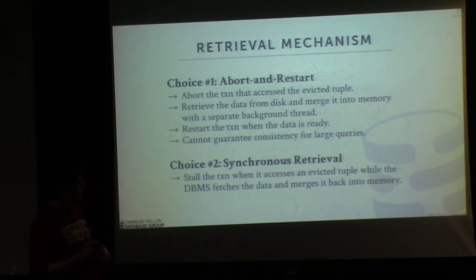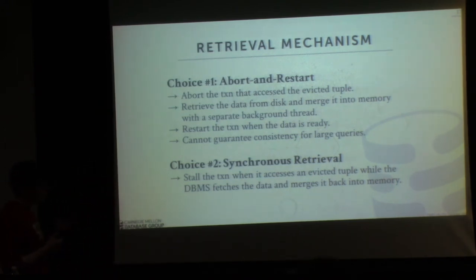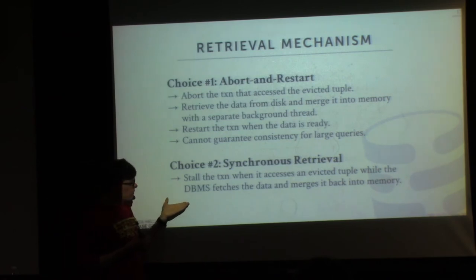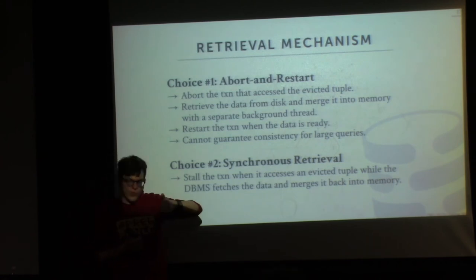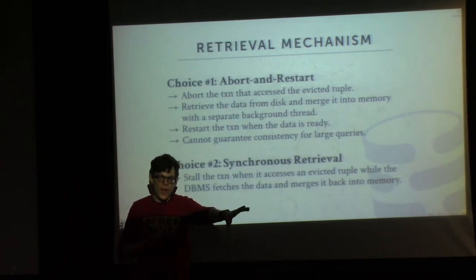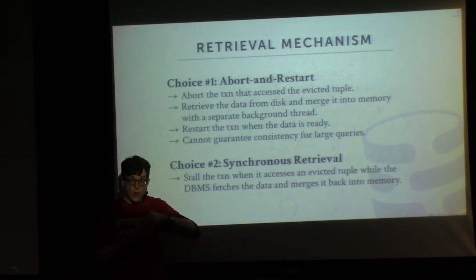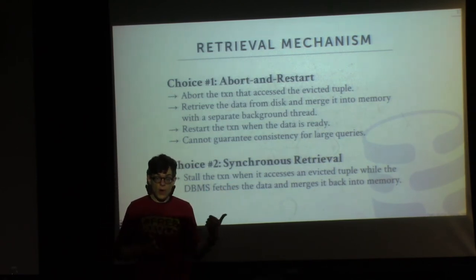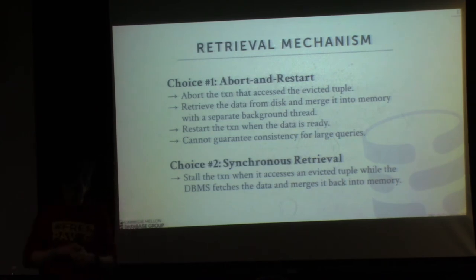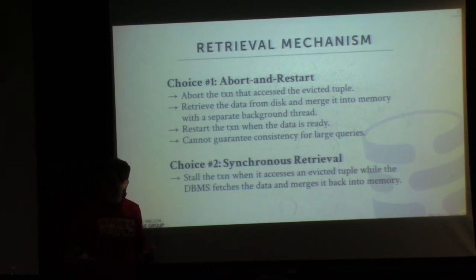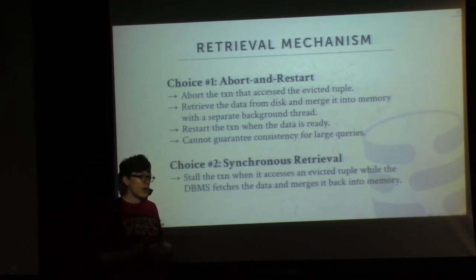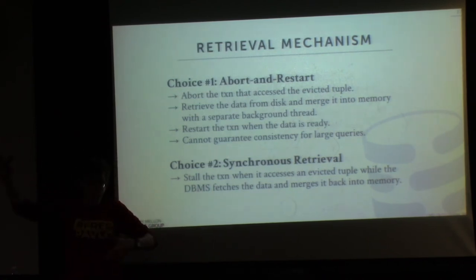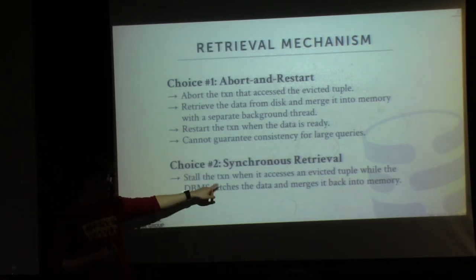The other approach is what a disk-based system does: as soon as you try to access something that's been evicted, pause the transaction right there, synchronously go fetch the data, bring it back into memory, merge it into our indexes, and restart the query where it left off. Depending on the concurrency control scheme, this may or may not be a good idea. It also depends on the storage device — if you have a fast device, this may not be a big deal, but fetching something from Amazon S3 could take tens of milliseconds, which could be very bad.